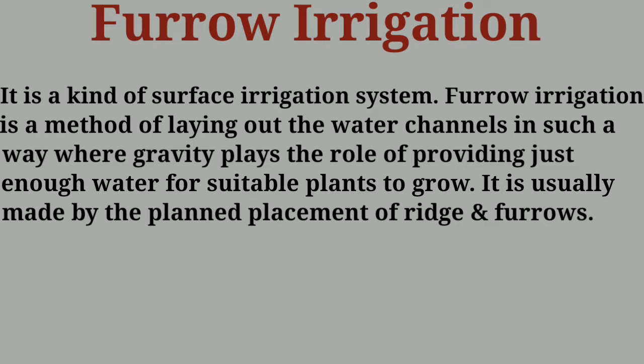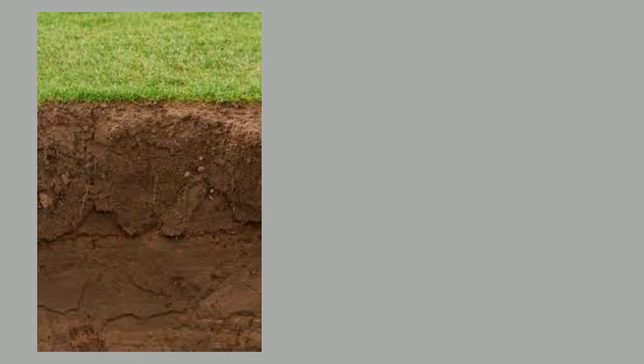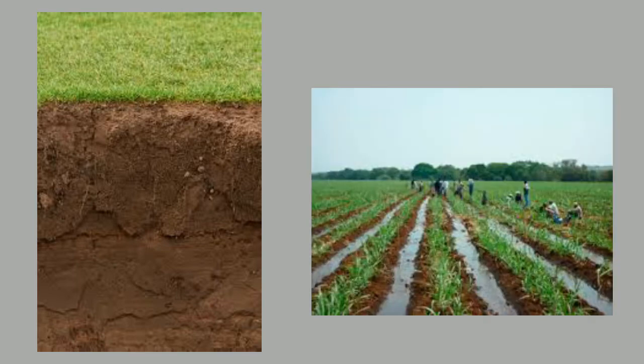When do we use furrow irrigation? We choose furrow irrigation when our soil texture is fine, and when our crop is planted in a single row. For crops planted in single rows, furrow irrigation is the preferred method.